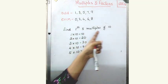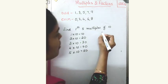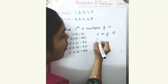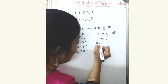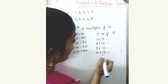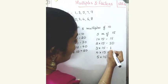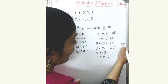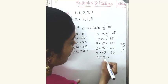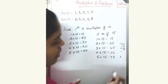If you are asked to find the first 5 multiples of 15, how will you find out? 1 into 15, then 2 into 15, then 3 into 15, 4 into 15, 5 into 15. Find the product: 15, 30, 45. 45 plus 15 is 60. 5 into 15: 5 fives are 25, carry over 2; 1 into 5 is 5, plus 2 is 7. So 75. Like this, you can find out the multiples.